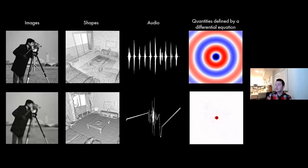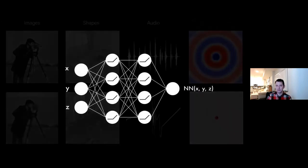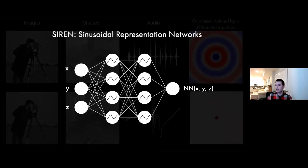Another motivation for continuous representations is solving physics-based problems. Coordinate-based networks, also called implicit neural representations, could enable solving problems faster and finding better solutions by learning priors over signals. For physics applications, these architectures must model not only the signal but also its derivatives to solve partial differential equations. Common architectures fail at this. So we introduce sinusoidal representation networks, which we call SIREN — a simple multi-layer perceptron using the periodic sine as its nonlinearity.